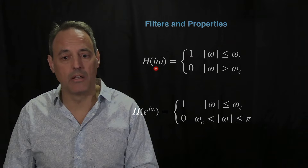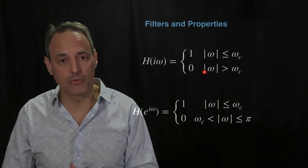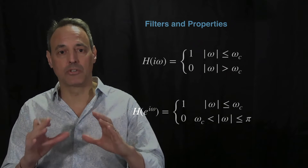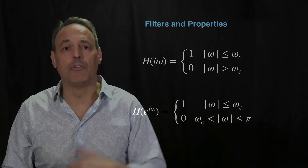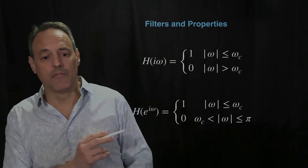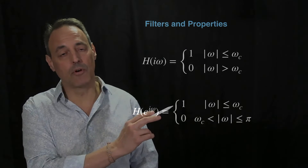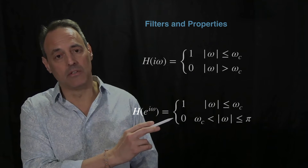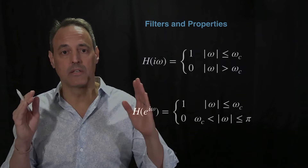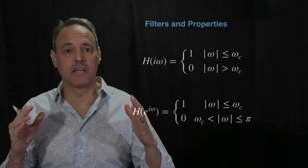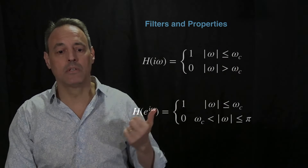In the continuous case, H(iω) equals one for some frequency less than ω_c and zero elsewhere, so only one band of frequency gets through near zero frequency. That's your low-pass filter. In the discrete time case, H(e^{iω}) is one again for some frequency below a critical value and zero between π and negative π. For the discrete case, the Fourier domain repeats itself every 2π intervals.